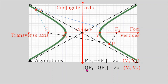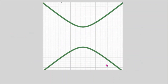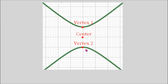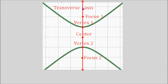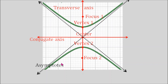If we pick another point Q on the hyperbola, the absolute value of the distance from Q to F1 minus the distance from Q to F2 is also equal to 2a. So we can write QF1 minus QF2 equals 2a. Some hyperbolas open upward and downward. The parts are the center, the vertices (vertex 1 and vertex 2), the foci (focus 1 and focus 2), the transverse axis, the conjugate axis, and the asymptotes.